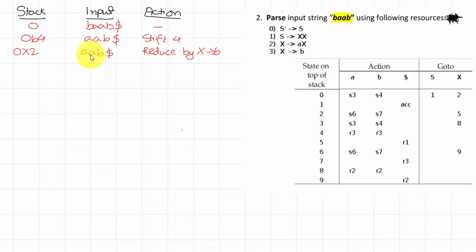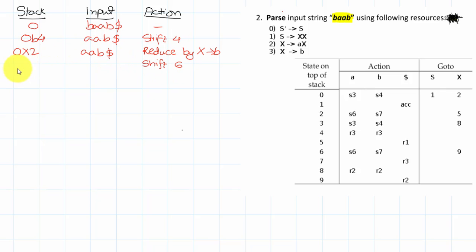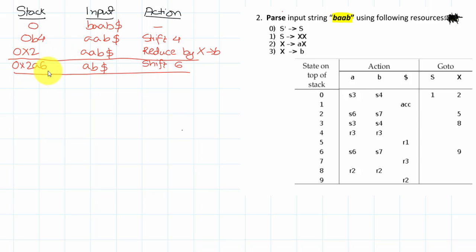We're still left with A A B in the input because during reduce moves we don't discard parts of the input string — we haven't actually shifted that part into the stack. We've just replaced whatever was inside with the left-hand variable. Now with state 2 on top of the stack and input A, we shift by 6 — consuming one A — so the stack is now 0 X 2 A 6.